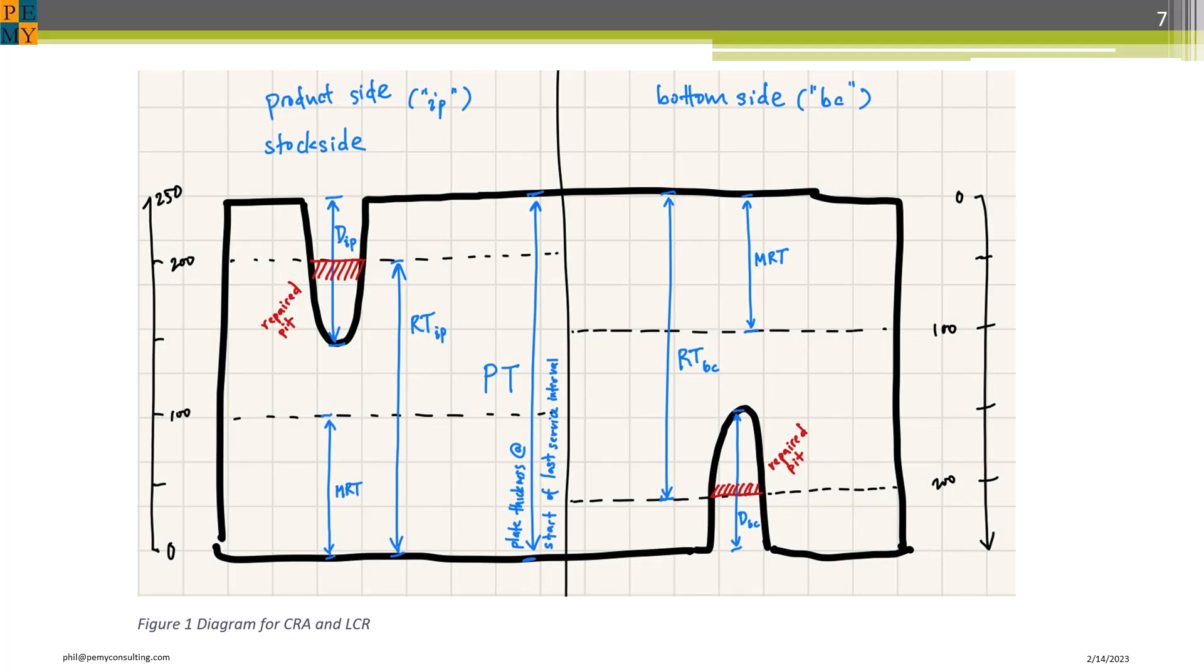This diagram shows top side and bottom side corrosion thinning of the bottom plate, so each side must be considered separately.